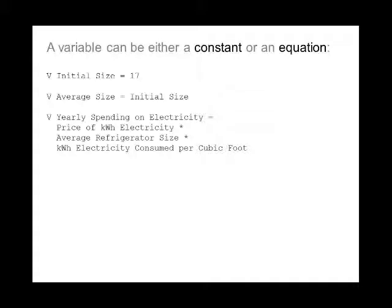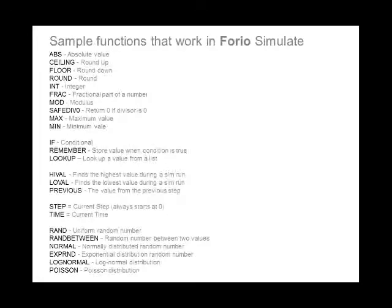The first of five statement types is a variable, which can be either a constant or an equation. For example, initial size of a refrigerator is set to 17 cubic feet. Average size can equal initial size as an identity. Yearly spending on electricity equals the price of a kilowatt hour, times average refrigerator size, times the kilowatt hours of electricity consumed per cubic foot.